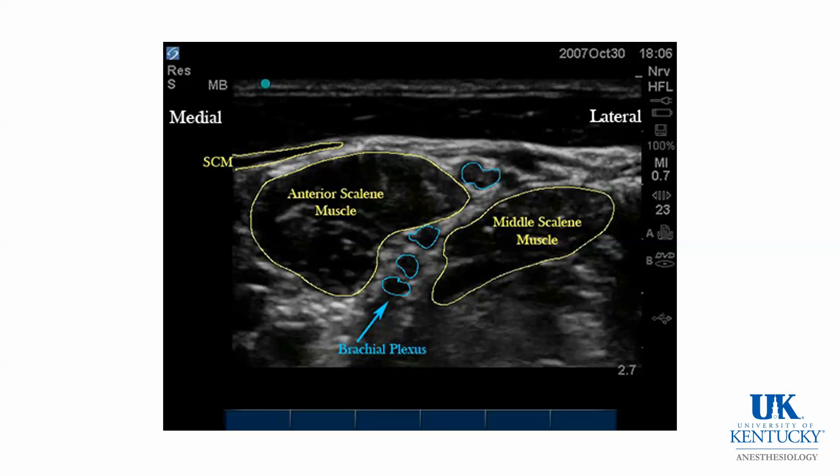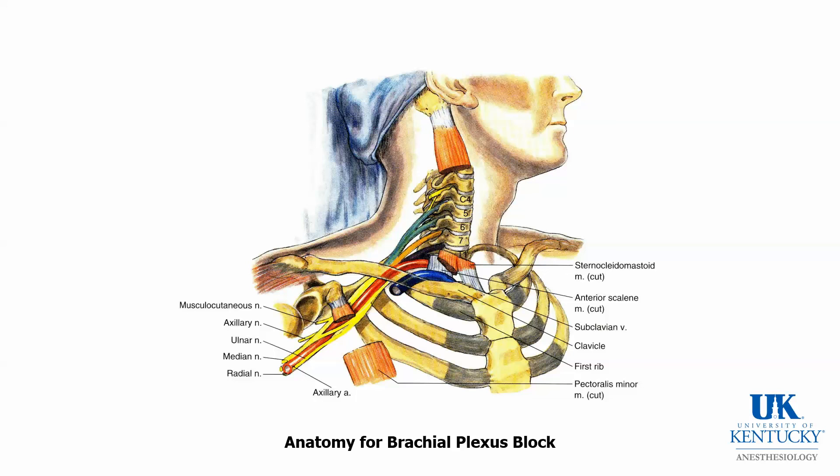Imaging of the brachial plexus at this level reveals the so-called snowman sign, where the C5, C6, and C7 roots are imaged one on top of the other. More medially, we have the large vascular structures — the carotid artery and internal jugular vein. Although the phrenic nerve cannot be seen due to its small size, it lies on the anterior surface of the anterior scalene muscle. The provider here has outlined the structures that should be imaged when performing this block, showing the complex course of the plexus towards the upper extremity.